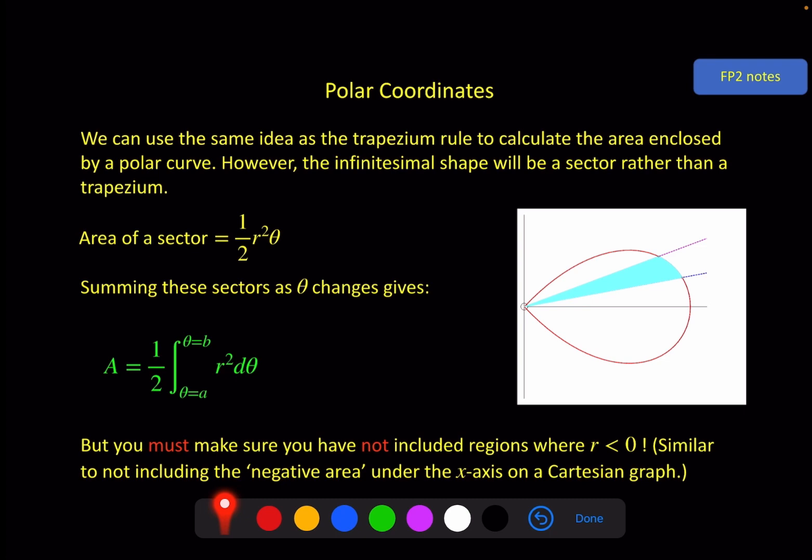Anywhere where r is negative, you should not draw it, even though some graphing apps will draw it. In the same way, you should not include regions where r is giving you a negative value when you're integrating. For example, if you wanted to do cos 2θ, you have a loop here and a loop here. But if you just integrated all the way round from 0 to 2π, it would include the negative here and here. What you would do is just integrate for this loop and then double it.